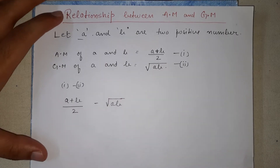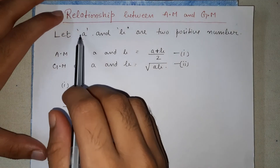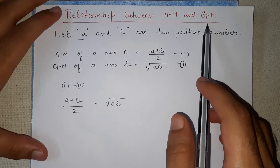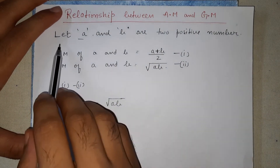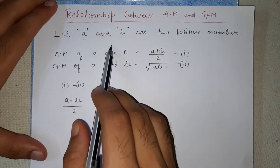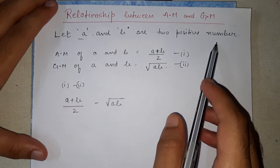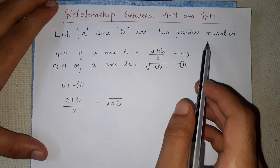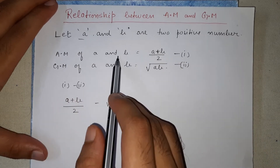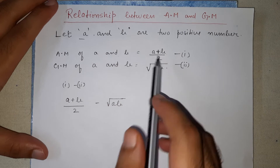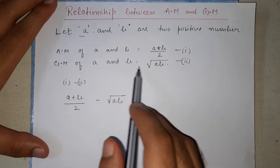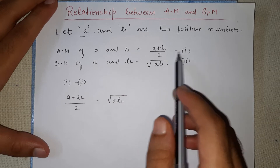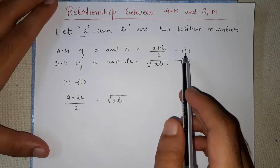Hey friends, in this video we are going to see the relationship between arithmetic mean and geometric mean. Let a and b be two positive numbers. The arithmetic mean of a and b is (a + b) / 2, and the geometric mean of a and b is √(ab). We call these equation number one and equation number two.